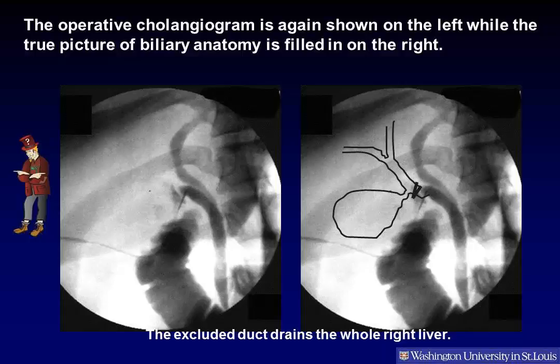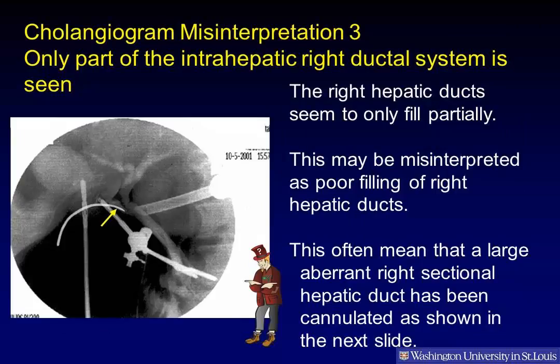The excluded duct drains the whole right liver. Cholangiogram misinterpretation 3: Only part of the intrahepatic right ductal system is seen. In this cholangiogram, the right hepatic ducts seem to fill only partially. This may be misinterpreted as poor filling of right hepatic ducts. However, it often means that a large aberrant right sectional duct has been cannulated, as shown on the next slide.